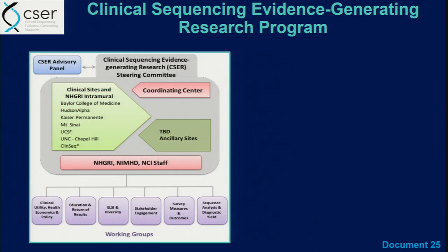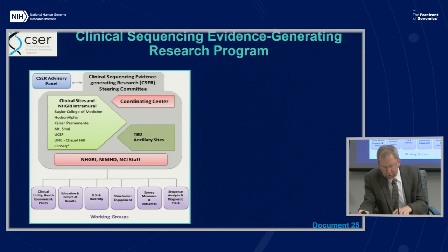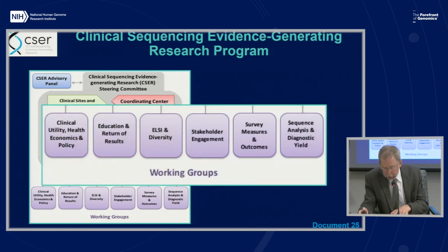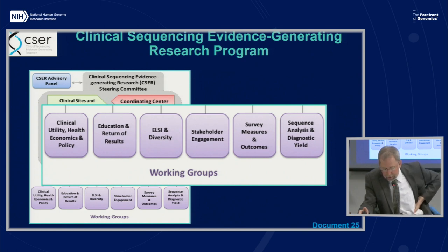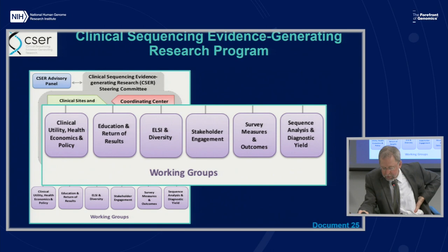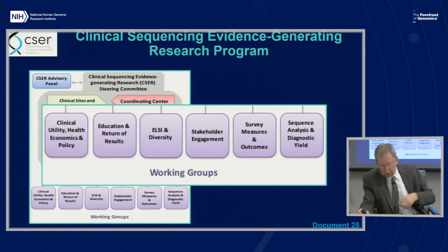Since the start of funding for phase two of CSER last summer, investigators have established six working groups covering clinical utility, education and return of results, ethical/legal/social implications and diversity, stakeholder engagement, survey measures and outcomes, and sequence analysis and diagnostic yield. The working groups have been focusing on harmonizing measures and outcomes in study patients and providers. These harmonized measures will be shared with other NHGRI genomic medicine consortia, including Emerge and Ignite. Investigators are also preparing for a satellite stakeholder workshop during the next CSER in-person meeting in September.